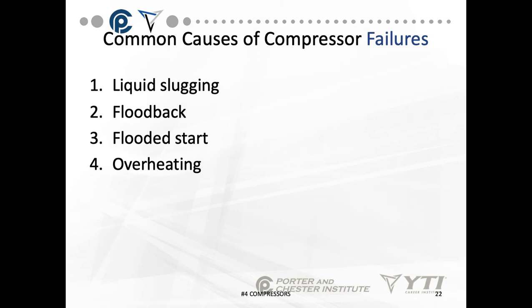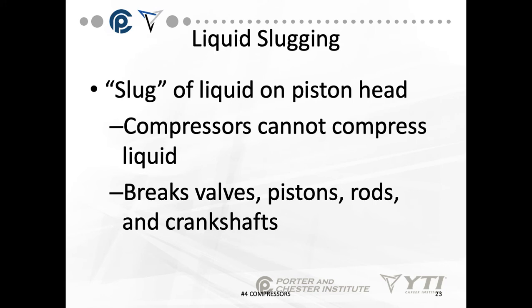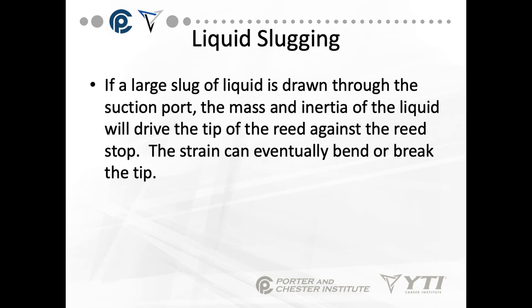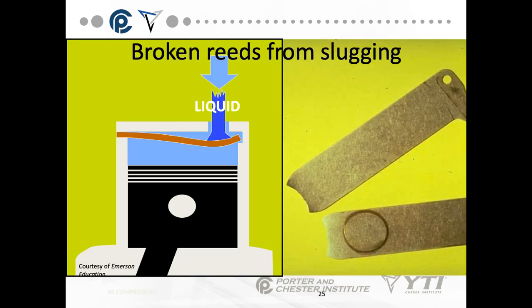Common causes of compressor failure include liquid slugging, flood back, flooded start, and overheating. Liquid slugging means a slug of liquid — normally refrigerant — is on the piston head. Compressors cannot compress liquid; it breaks valves, pistons, rods, and crankshafts. If a large slug of liquid is drawn through the suction port, the mass and inertia will drive the tip of the reed against the reed stop, eventually bending or breaking it. Broken reeds from slugging are a clear sign of this failure mode.